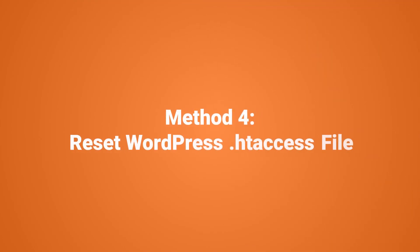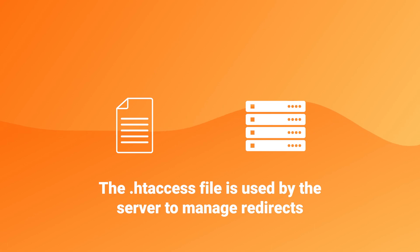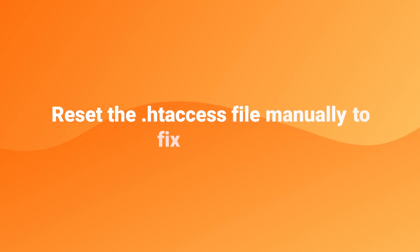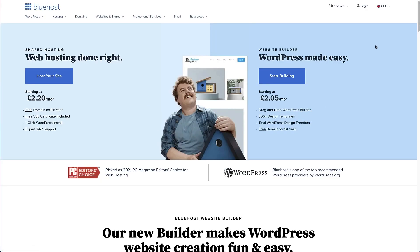If fixing the WordPress URLs doesn't work, then the next thing we can look at is resetting the .htaccess file. This is a special file used by the website server to manage redirects and other server settings. Sometimes WordPress plugins make changes to the .htaccess file which can cause this error. To fix this we need to manually reset the WordPress .htaccess file. I'm going to show you how to access the file through the file manager on my WordPress hosting control panel, using Bluehost — though this should be accessible through your hosting provider's dashboard too.